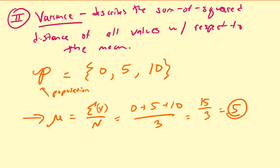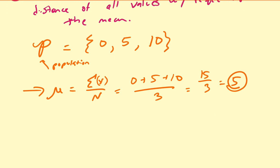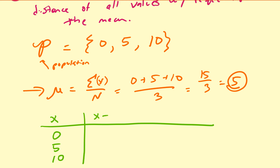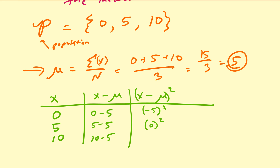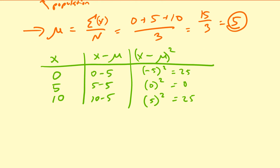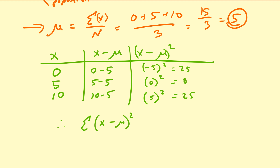We want to know the sum of squared distances of all values with respect to this mean. Using a chart: the values are 0, 5, and 10. The distances from the mean are 0 − 5, 5 − 5, and 10 − 5. Squaring those distances makes them non-negative: (−5)² = 25, 0² = 0, and 5² = 25. The sum of those squared distances is 25 + 0 + 25 = 50.